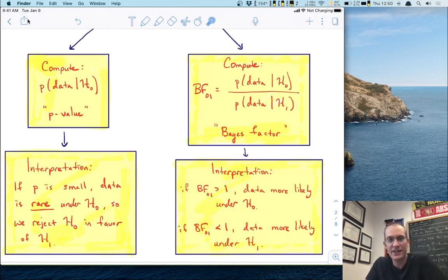And how we interpret it is this. If BF01 is bigger than one, this is a fraction, so that means that the numerator would be the bigger number, this would tell you that the data are more likely under the null. On the other hand, if BF01 is less than one, that tells you the denominator is the bigger number, meaning that the data are more likely under h1. Now this is kind of nice. There's immediately some advantages that can come from this approach because this thing on the left hand side also assesses the fit of h1. That doesn't happen over here. This just makes a decision based on the null and the null alone.